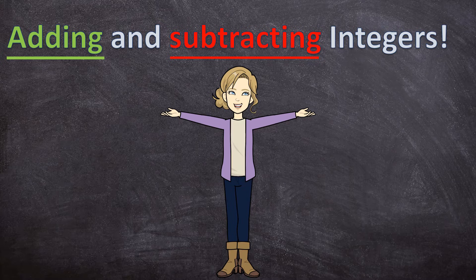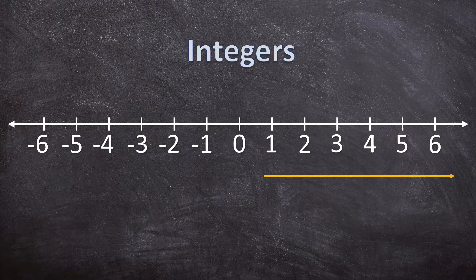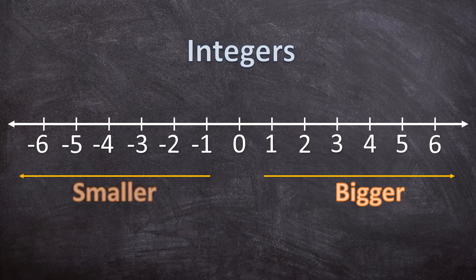But before we do that, let's quickly take a step back to last week's video and look at one concept. When we look at this number line with positive and negative integers, we know from our last video that as we go to the right, the numbers get bigger and bigger, and as we go to the left, the numbers get smaller and smaller. If you don't know the basics of integers yet, I would suggest you go and look at that video before continuing with this one.